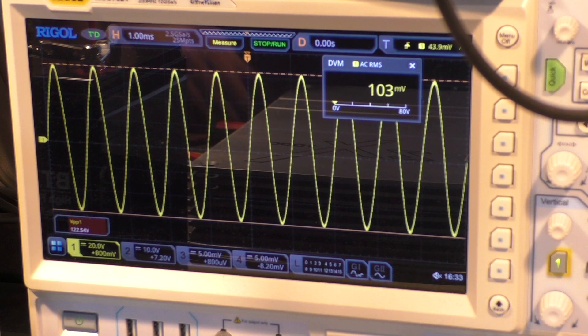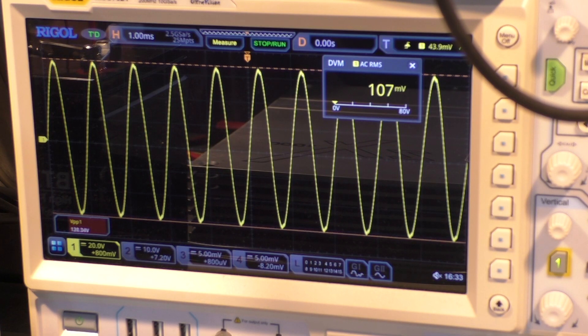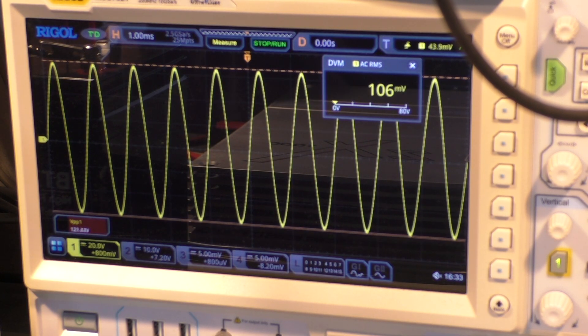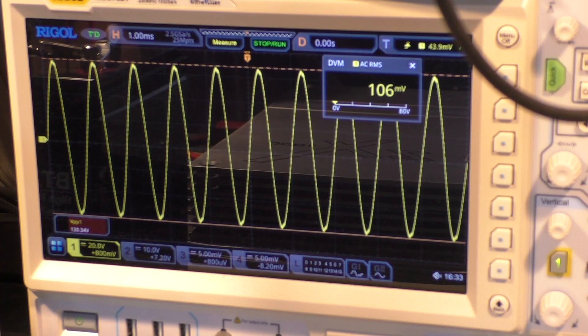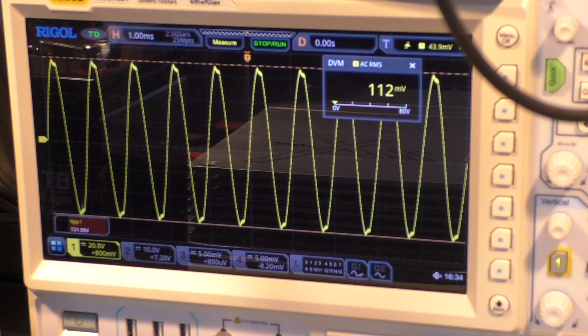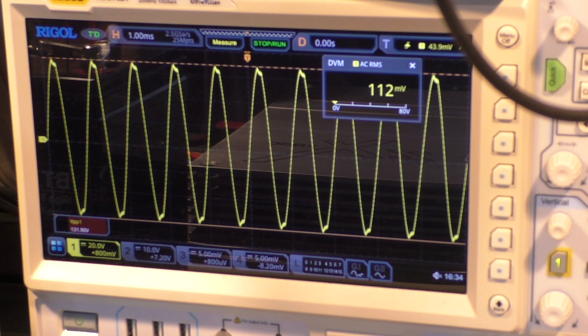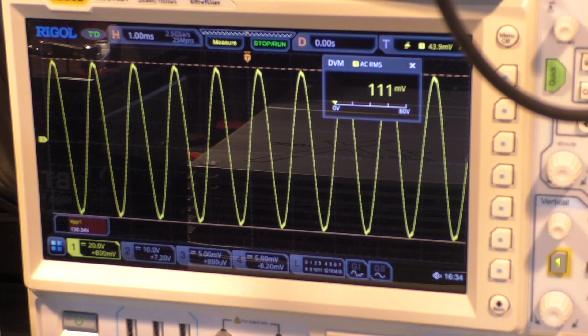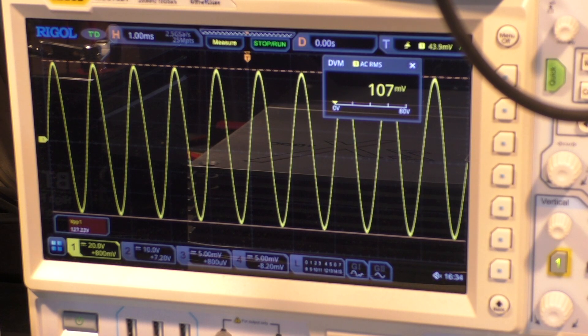Now we can see it starts to distort. The sine wave is not a sine wave anymore. And by the way you can also hear that. This is a clean sine wave you can hear it. Now it starts to distort and now the distortion is clearly audible.